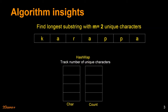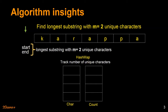We'll also maintain a few other variables. The first is a pointer which we use to traverse the character array. We are going to use a window-based approach, maintaining two variables — start and end — which give us the longest substring with M unique characters. We also track the window size using the variable end minus start plus one, and we maintain the longest substring found so far as we traverse the array.